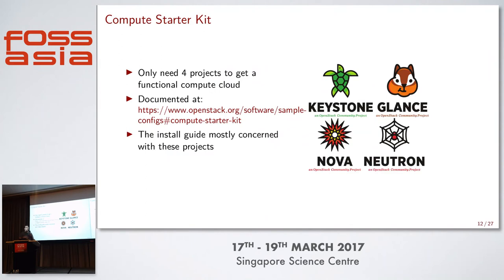It turns out there is something called the Compute Starter Kit, documented on the foundation's marketing website. You only need four projects out of those 1,800 Git repos: Keystone, Glance, Nova, and Neutron. Keystone handles identity management — user management, authentication, and maintaining a catalog of all services. Glance manages VM images used to boot servers. Nova is the service that actually boots and manages the VM lifecycle. Neutron handles network provisioning. These four projects give the base functionality needed, and they're also what the install guide is mainly concerned with anyway.